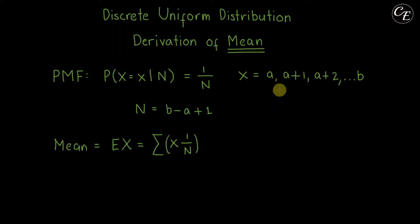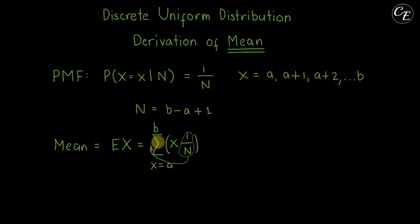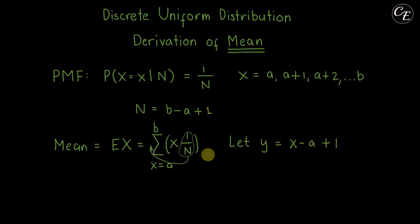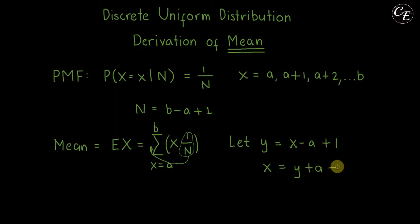The random variable can take values from a to b, so the summation runs from x equals a to x equals b. Since 1 over n is a constant, we can move it outside the summation. Then we need to apply the transformation y equals x minus a plus 1, so we're going to transform x to y using this. From this, x equals y plus a minus 1.